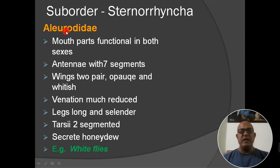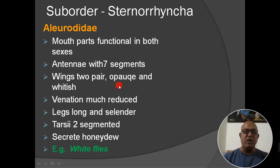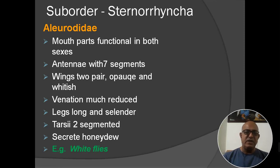Next family: Aleyrodidae. Mouthparts are functional in both sexes. Antennae have seven segments. Wings are two pairs, opaque and white in color. Wing venation is much reduced. Legs are long and slender. Tarsi are two segmented. They secrete honeydew. The main example is whiteflies.